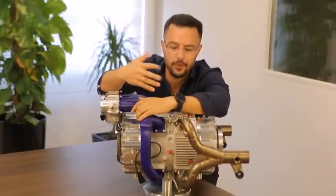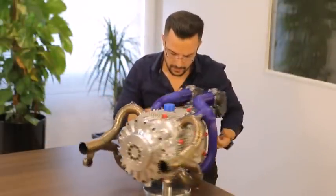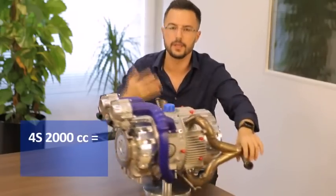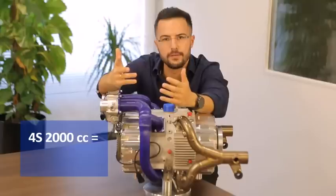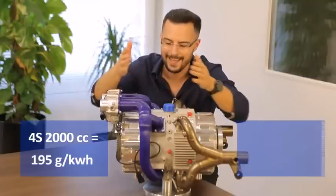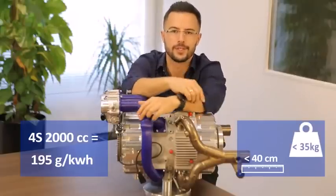And just so you can appreciate how small it is, this one-stroke engine right here, in terms of power output, is the equivalent to a 2000cc four-stroke engine. In other words, you can have the power and efficiency of a state-of-the-art four-stroke 2000cc engine in less than 40cm in length and only 35kg.